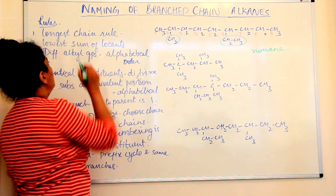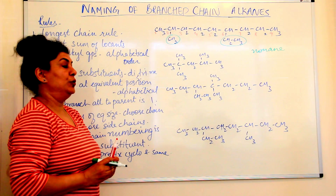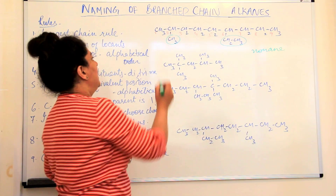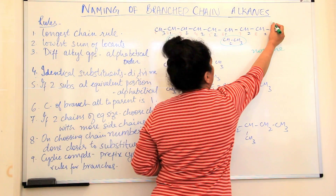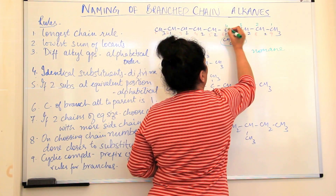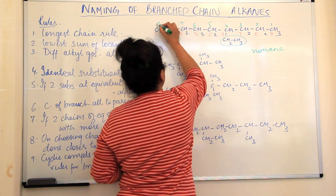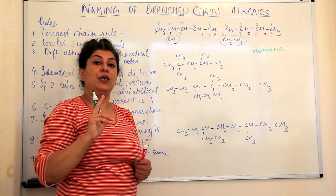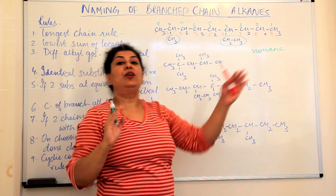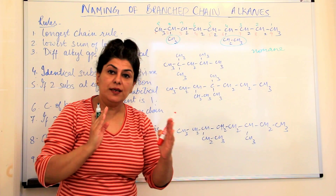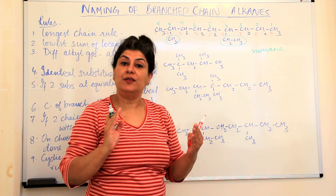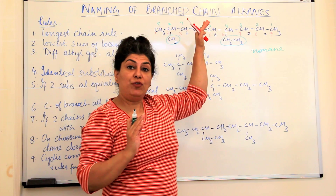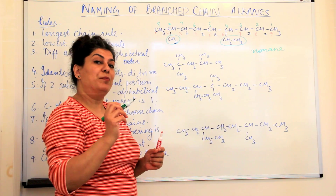The second rule is known as the lowest sum of locants rule. According to this rule, you can number the chain from both sides — that is 1, 2, 3, 4, 5, 6, 7, 8, 9 from one side, or from the other side. Keep in mind that you can only number a chain once at the beginning; once you've started naming the compound you cannot start counting from the other side. You choose either side, but which one is decided by the lowest sum of locants.